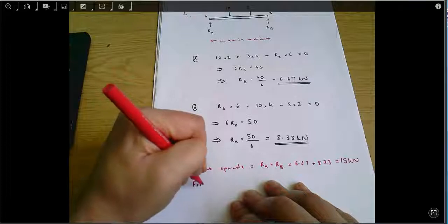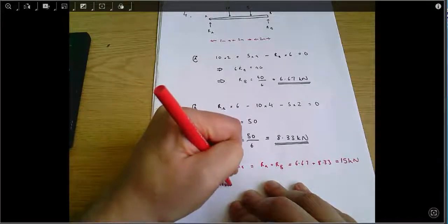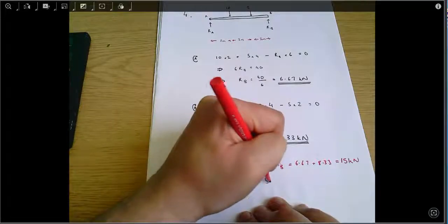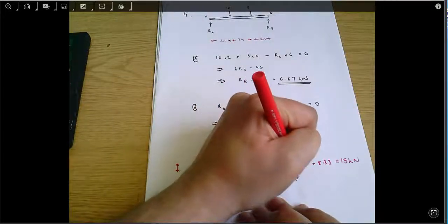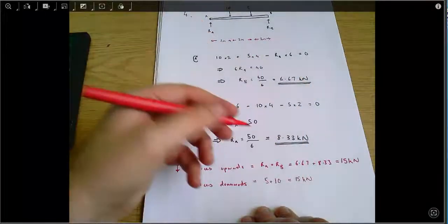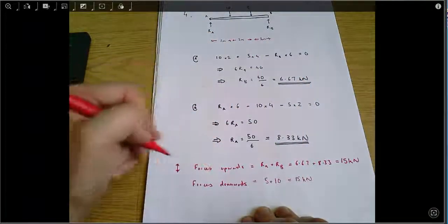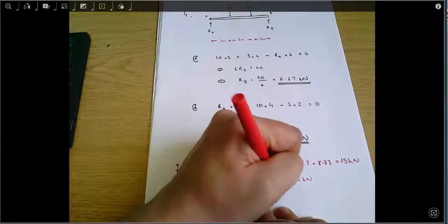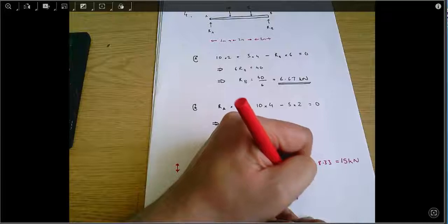Forces acting downwards equals 5 plus 10, which equals 15 kilonewtons as well. And so that's good news. Our forces acting upwards equal our forces acting downwards, so equilibrium is maintained.